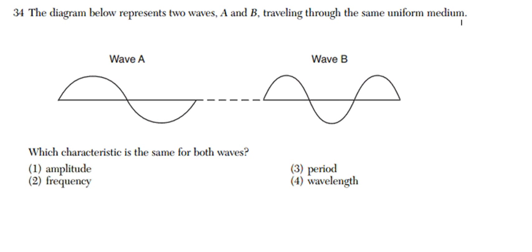The diagram below represents two waves, A and B, traveling through the same uniform medium. Which characteristic is the same for both waves?